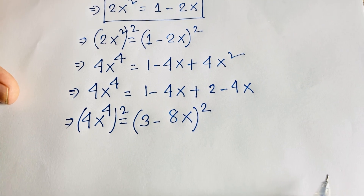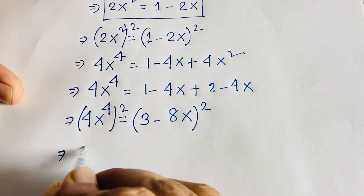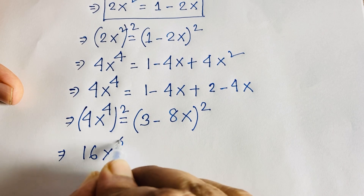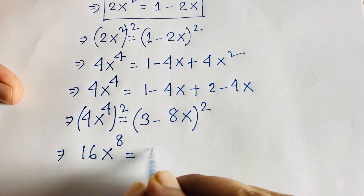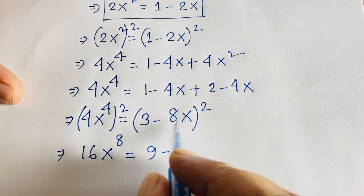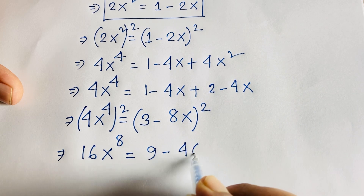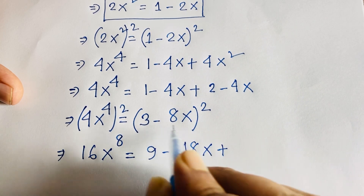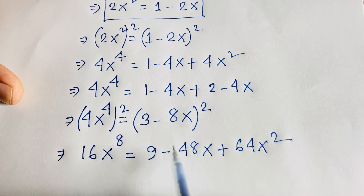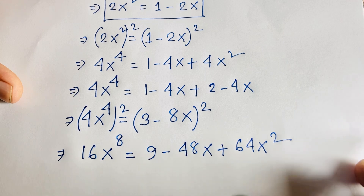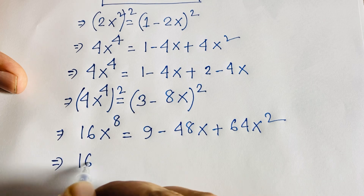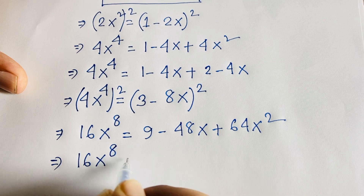Squaring both sides of 4x⁴ = 3 minus 8x: the left side gives 16x⁸. On the right, using (a minus b)² identity, we get 3² minus 2 times 3 times 8x plus (8x)², which is 9 minus 48x plus 64x².